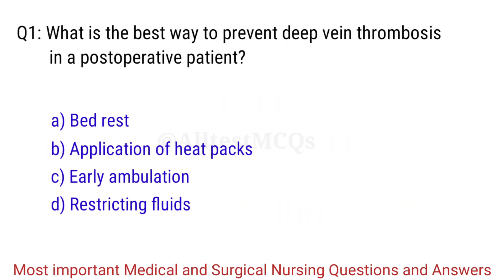Q1. What is the best way to prevent deep vein thrombosis in a postoperative patient? The right answer is Option C: Early ambulation.